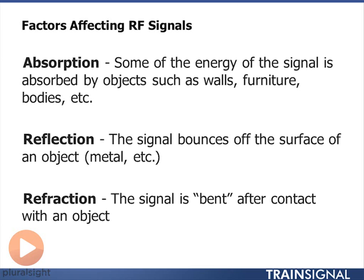Then we have reflection — the ability for a signal to bounce off a surface. If it wasn't for reflection, we wouldn't have wireless LANs today, because very seldom do I actually have line of sight between my transmitter and my receiver. Different surfaces reflect differently. Mirrors with a silver metallic backing, or metal filing cabinets — those signals are going to reflect really well off those surfaces, and I'm going to get more of a reflected signal than those surfaces absorb.